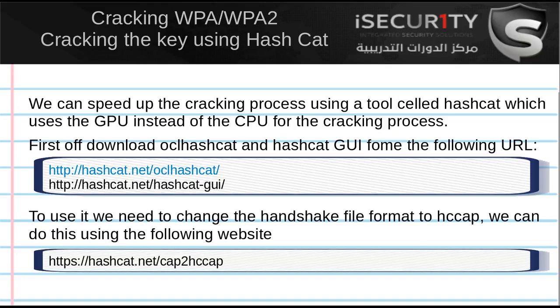To use hashcat from Windows, we're going to need to download two files. The first one is hashcat — the tool that actually does the cracking — and the second one is hashcat GUI, which is the graphical user interface for hashcat.